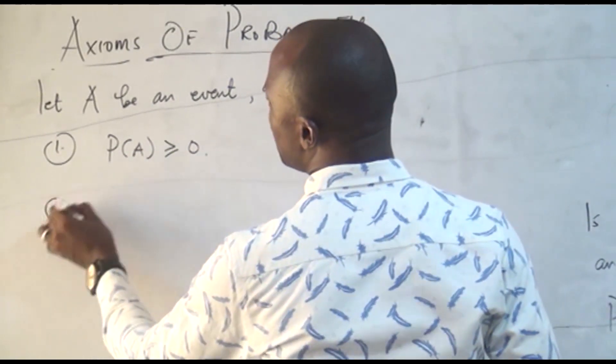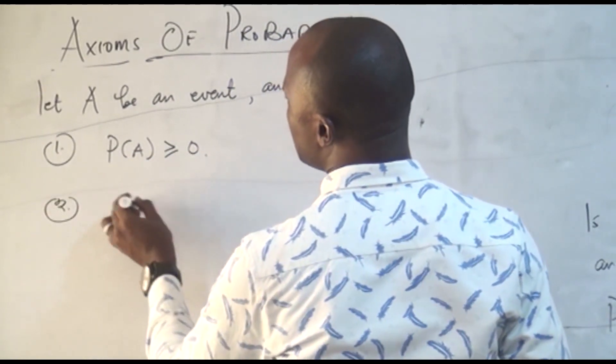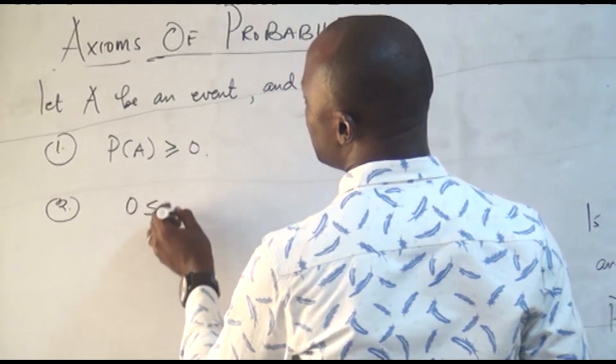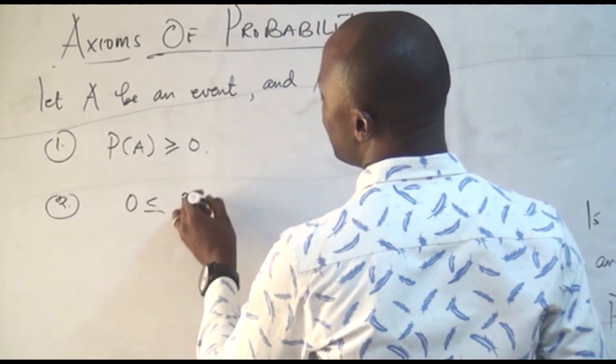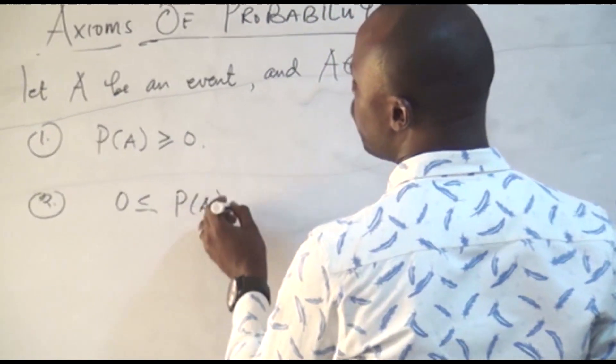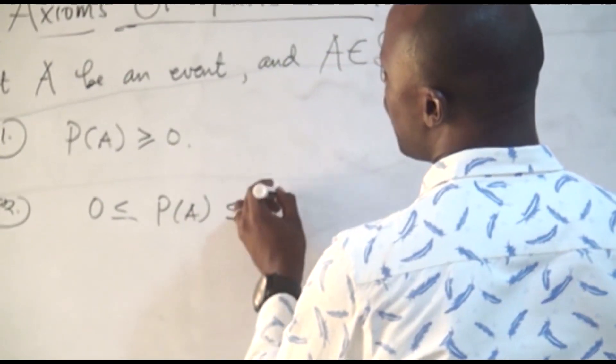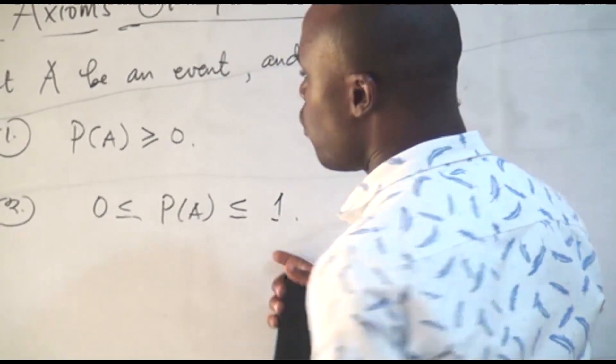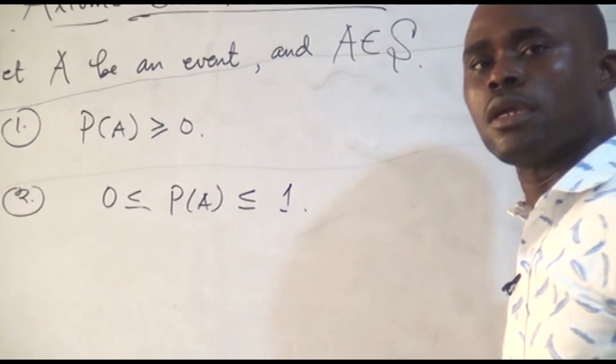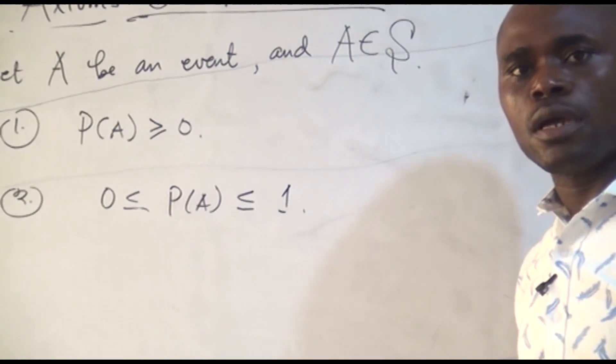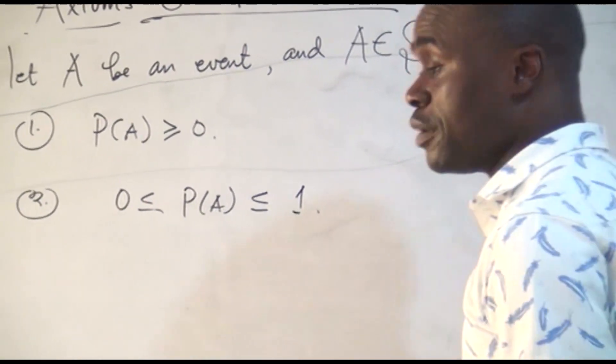The second thing is that the probability of an event must range between zero and one, inclusive. And it must be a real number.